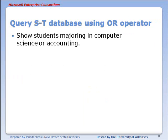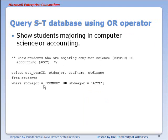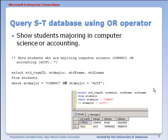Now let's look at students majoring in computer science or majoring in accounting. We construct our SQL statement, list our columns, list the table we get the data from, and then in the WHERE clause we list our criteria using the OR operator. We want students who are either majoring in computer science or accounting, and we see that two students meet one of those criteria.